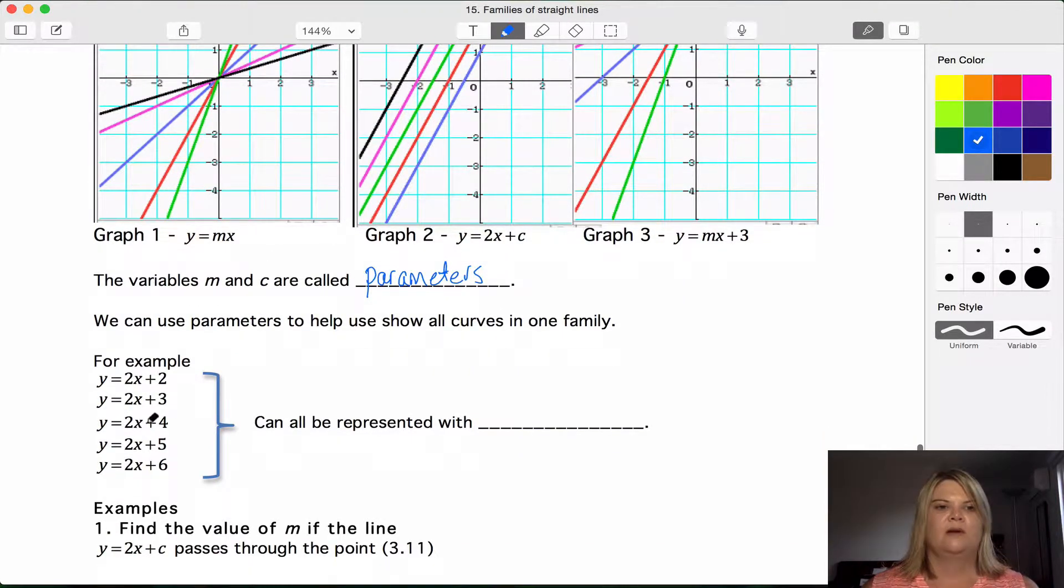For example, if we had all these ones, y equals 2x plus 2, y equals 2x plus 3, 2x plus 4, 2x plus 5, 2x plus 6, all the way to 2x plus 100. We can represent all of these equations which have the same gradient of 2, but a different y intercept with the equation y equals 2x plus c, and c is the parameter that changes.